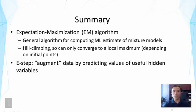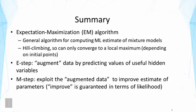The general idea is that we will have two steps to improve the estimate of parameters. In the E-step, we roughly are augmenting our data by predicting values of useful hidden variables that we would use to simplify the estimation. In our case, this is the distribution that has been used to generate the word. In the M-step, then, we would exploit such augmented data, which would make it easier to estimate the distribution, to improve the estimate of parameters.